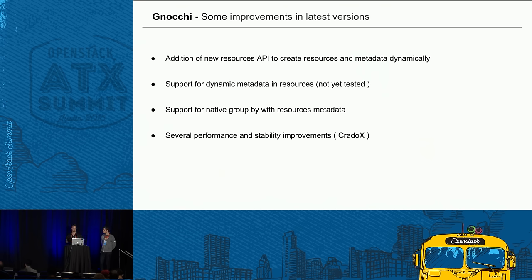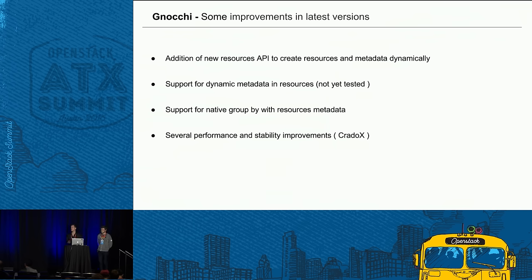We worked hard with the telemetry team providing feedback and resolving performance issues we encountered early on. We achieved really good performance using Ceph. Cradox is a different library the telemetry team created to use Ceph with Gnocchi to get faster access from the metricD and from the Gnocchi API to the Ceph cluster. Now, Stephen will talk about CloudKitty and then I will show the demo.